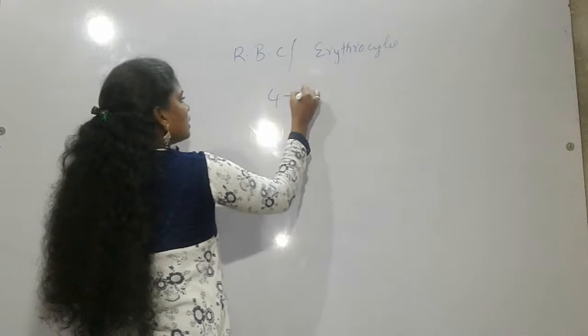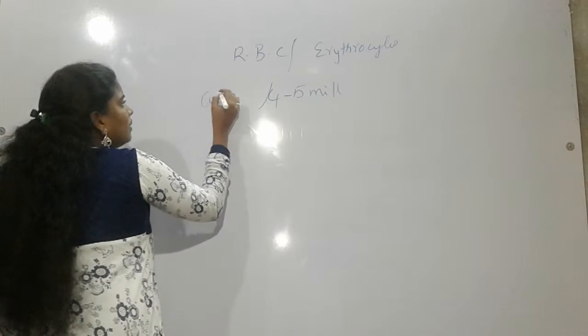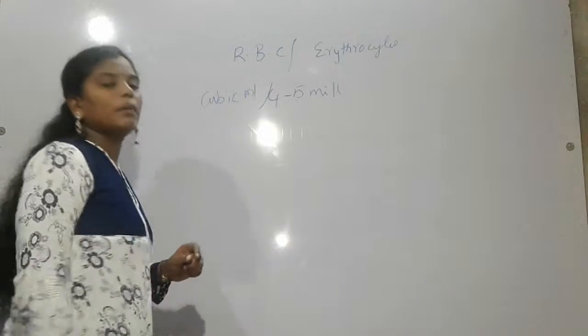There will be 4 to 5 millions in one cubic ml of blood.